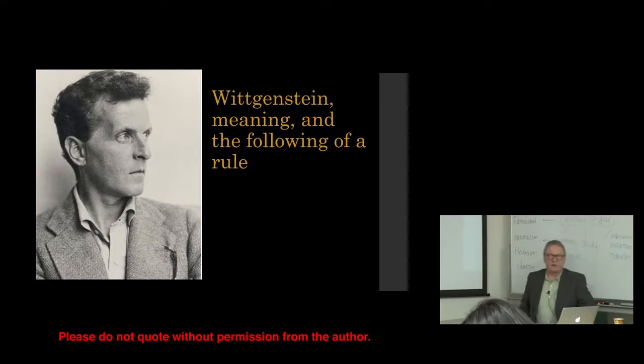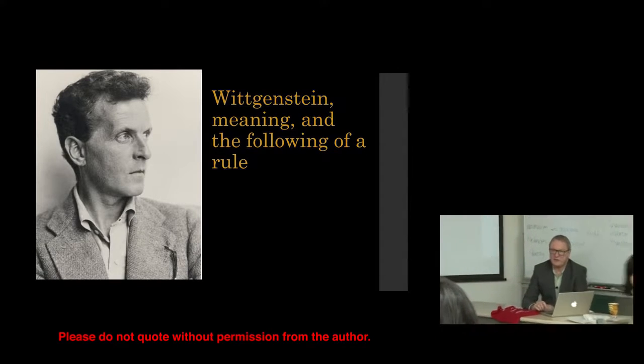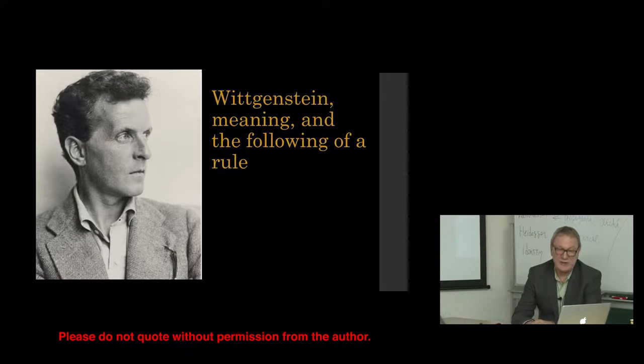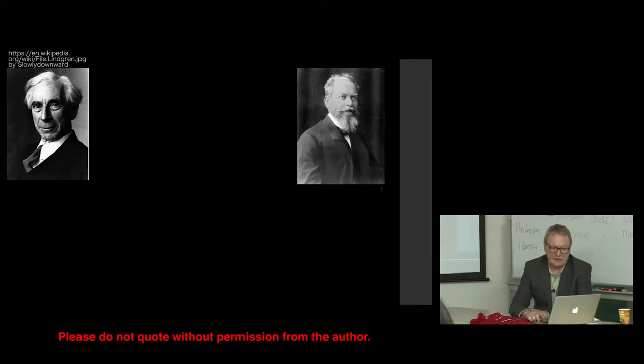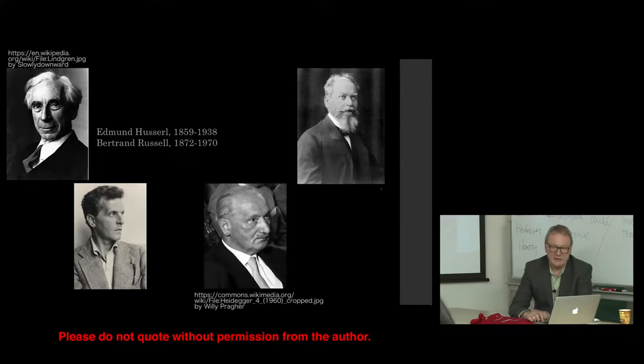Okay, so meaning and the following of a rule. Some people know how to follow the rule, others don't. Some people understand the joke from the 80s in English TV, others don't because they weren't there at the time - who's on the inside and who's on the outside. This is Husserl and that's Bertrand Russell, who were both writing around the same time, the beginning of the 20th century. This is Wittgenstein, who came into philosophy largely because of Bertrand Russell. He was Austrian but spent most of his working life in Cambridge, and that's Heidegger. Both Wittgenstein and Heidegger were born in the same year, 1889.